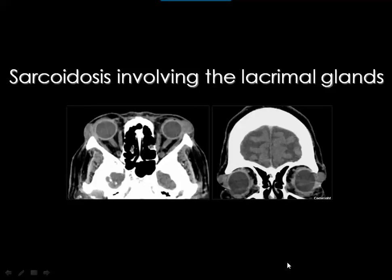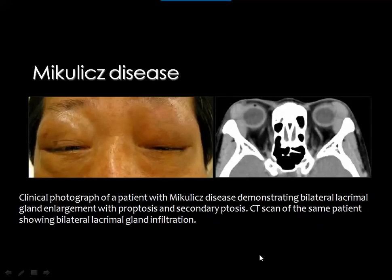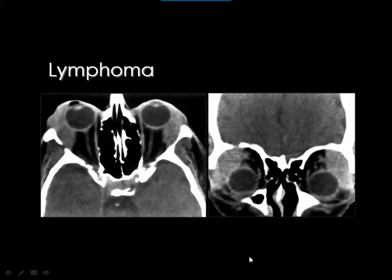Here is a case of proved sarcoid involvement of the lacrimal glands: both left and right lacrimal glands are almost symmetrically enlarged with homogenous post-contrast enhancement. A known case of Sjögren's syndrome shows the left lacrimal gland more enlarged than the right, both with homogenous enhancement. Mikulicz's disease shows bilateral almost symmetrical involvement with homogenous enhancement. Lymphoma can also affect both lacrimal glands bilaterally with enlargement and homogenous enhancement, and bilateral almost symmetric proptosis is appreciable.